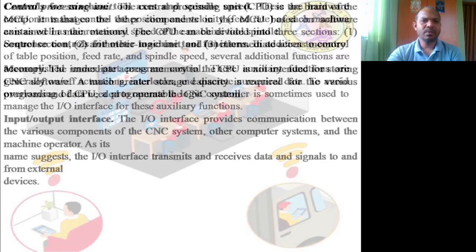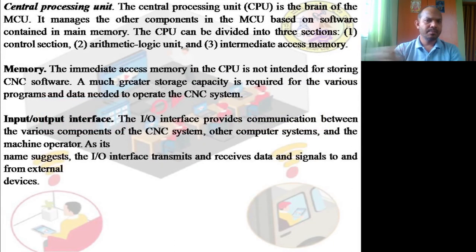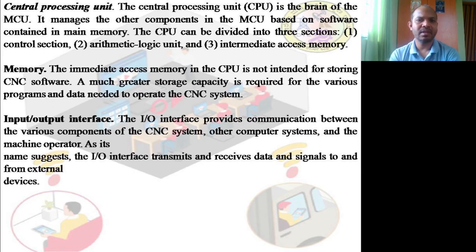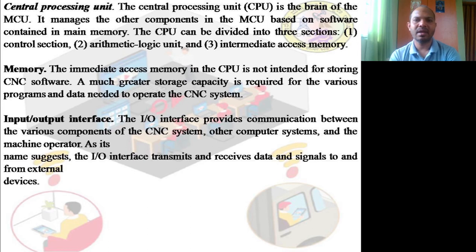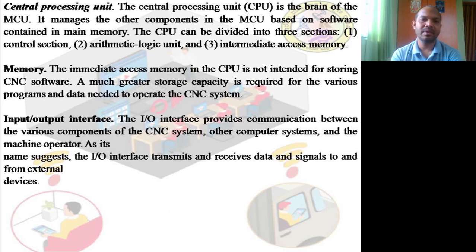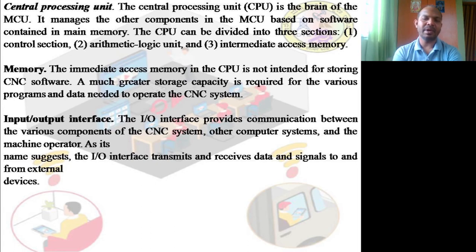The central processing unit is the brain of the machine control unit. It manages all other components based on software contained in main memory. The CPU is divided into three sections: the control section, arithmetic logic unit, and intermediate access memory. The CPU is not intended for storing CNC software — a much greater storage capacity is required for the various programs and data needed to operate CNC systems.